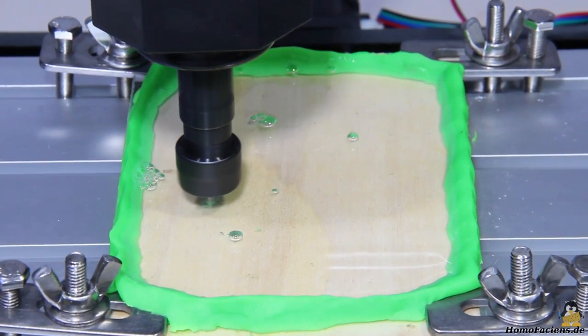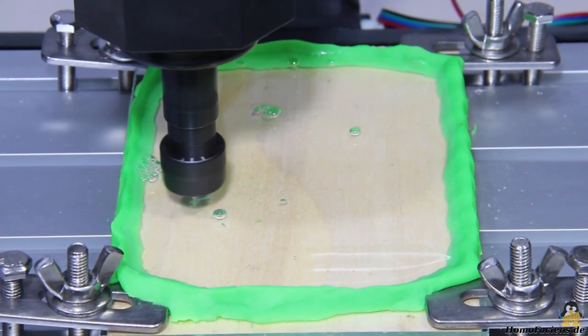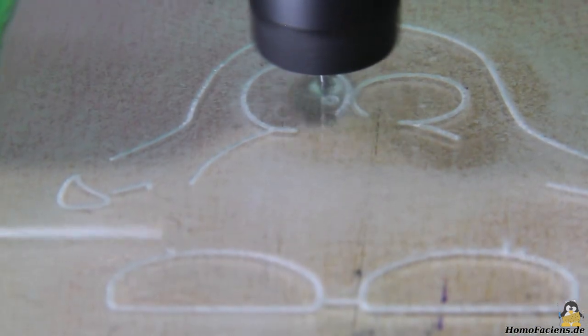When removing material with the milling cutter, frictional heat is generated. To prevent the plastic from melting, I made kerbs out of modeling clay and filled the resulting basin with water.